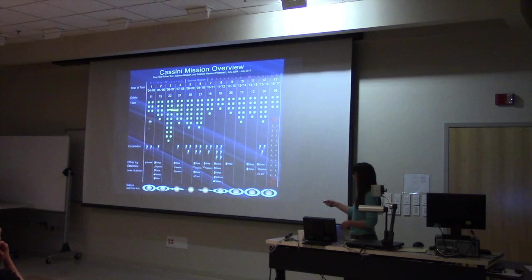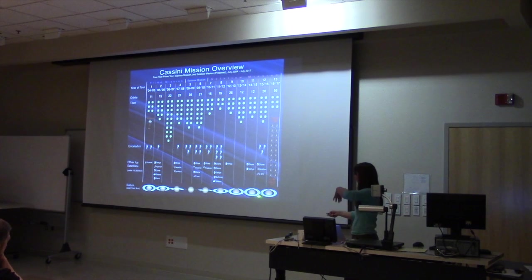This is just the Cassini mission overview slide that shows from year to year what Cassini is doing. And all of these little things that look like Titan, they're Titan flybys. We've got other moons here. Saturn, and its changing ring orientation.